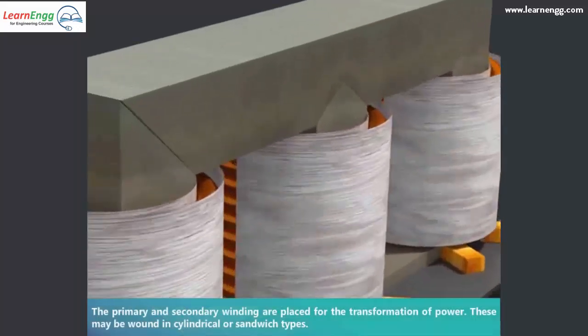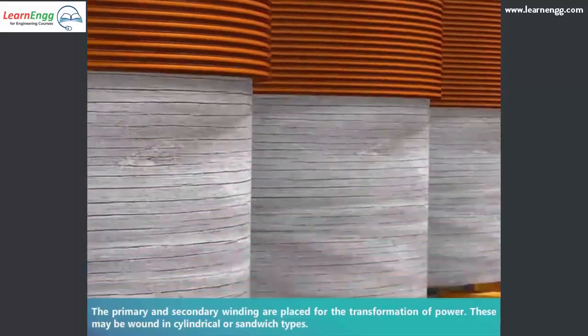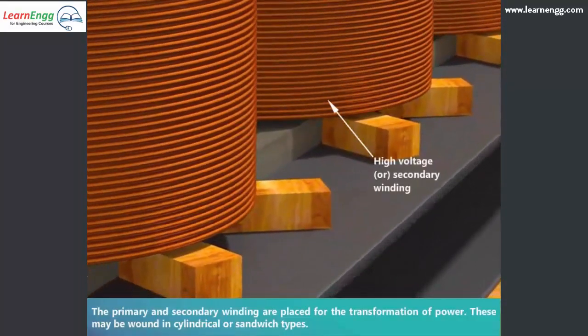The primary and secondary windings are placed for the transformation of power. These may be wound in cylindrical or sandwich types.